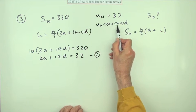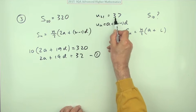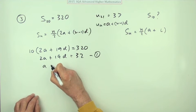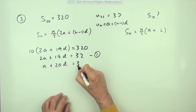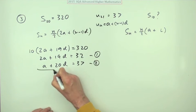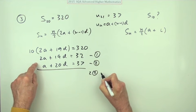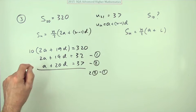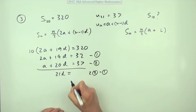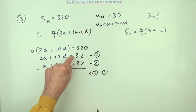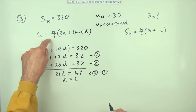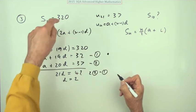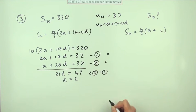The second equation uses the nth term formula: a + (n−1)d. For the 21st term: a + 20d = 37. That's equation two. Doubling equation two and subtracting equation one: 2a − 2a = 0, so 40d − 19d = 21d, and 74 − 32 = 42. Therefore d = 2.